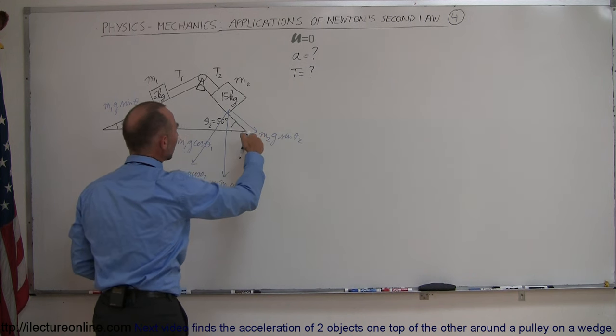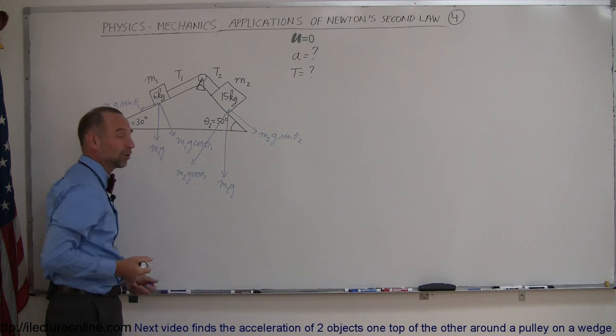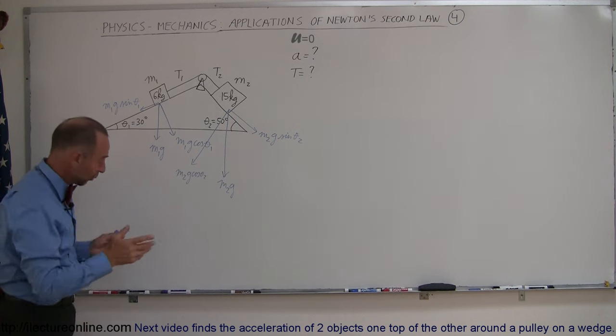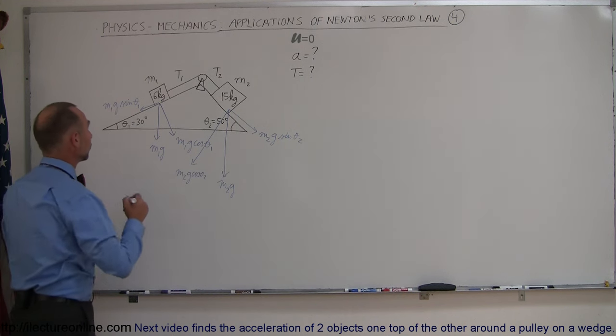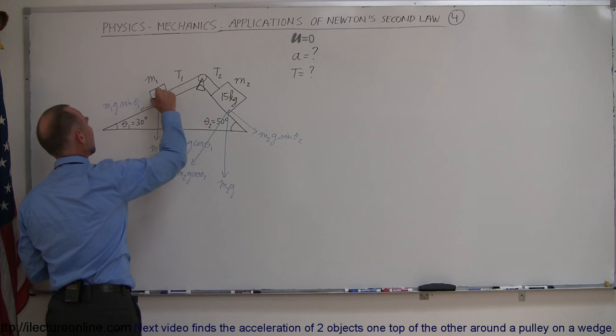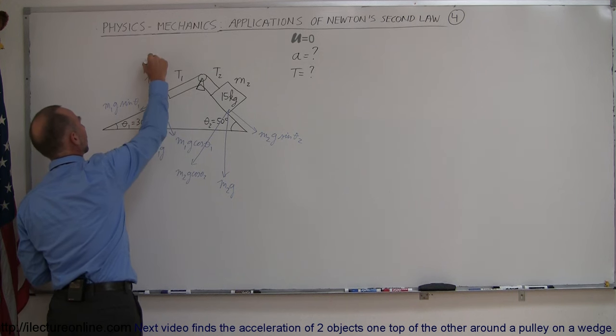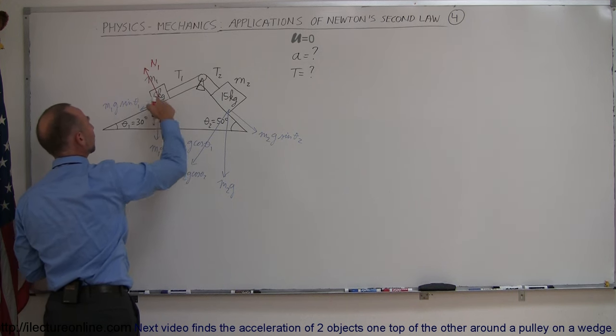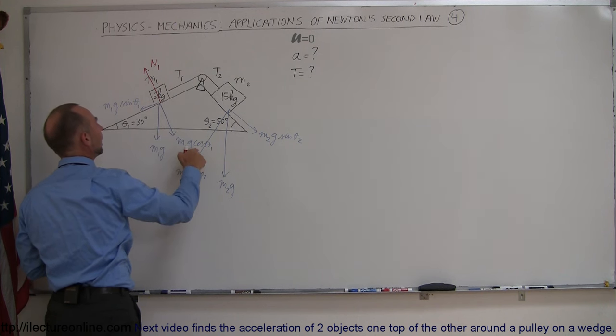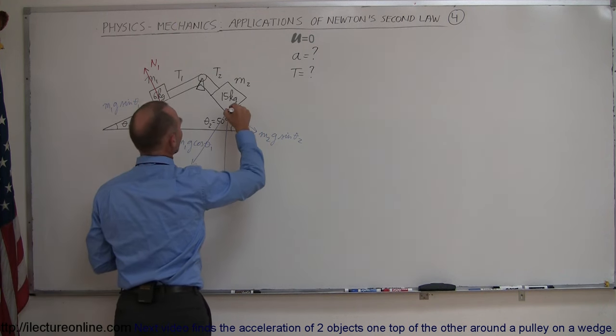So the parallel component is acting along the incline, the perpendicular component is perpendicular to the incline. We have the normal forces. Newton's third law indicates that there would be a reactionary force here which we call n1, which is opposite in direction to m1g cosine theta one, equal in magnitude.